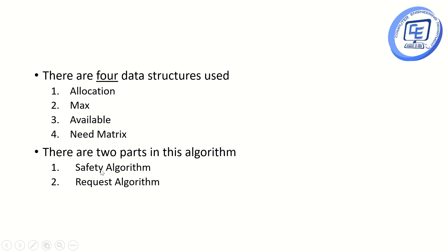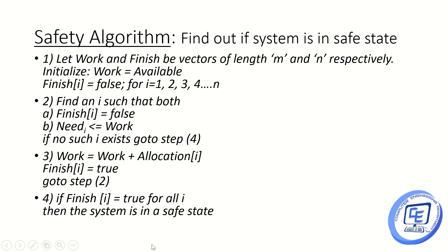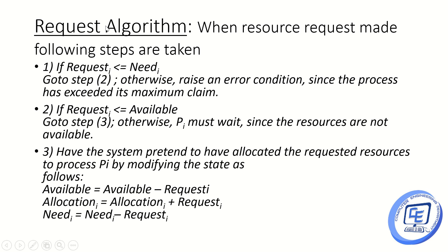There are two parts in this algorithm: the Safety Algorithm and the Request Algorithm. The Safety Algorithm finds out if the system is in a safe state, and there are four steps to carry out when running it. The Request Algorithm has three steps which are performed whenever a resource request is made. We will see both in detail when solving the problem.